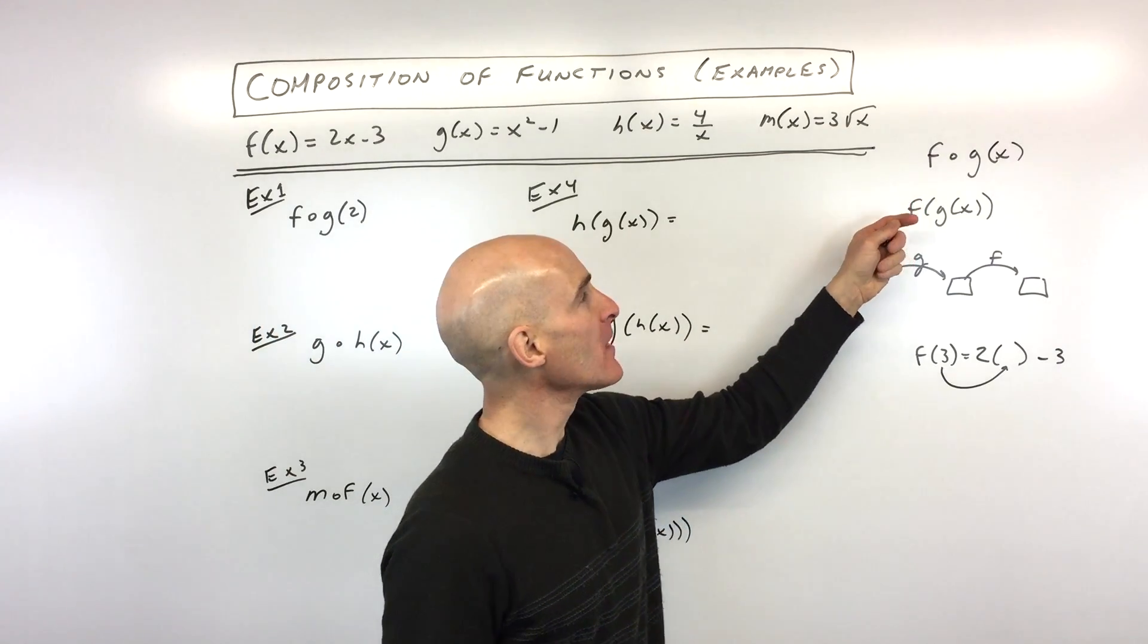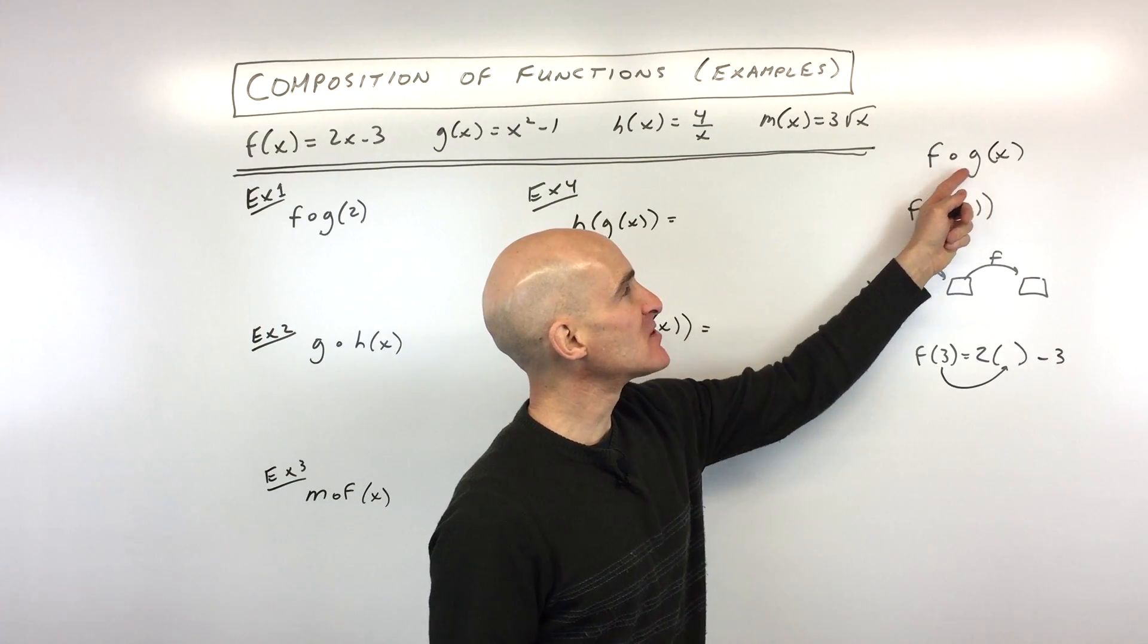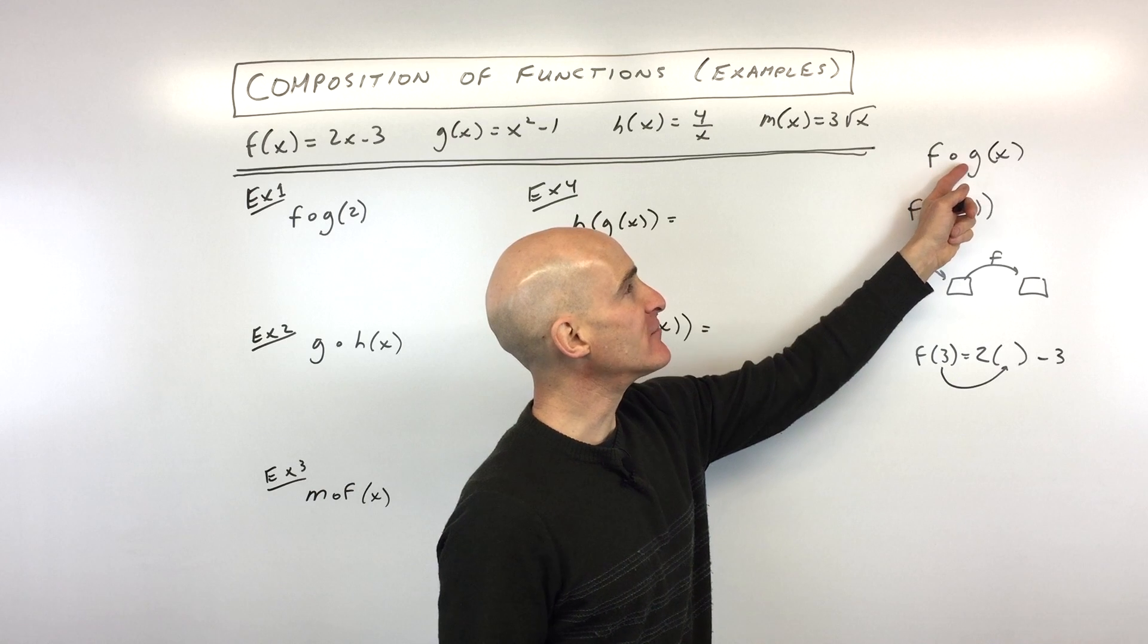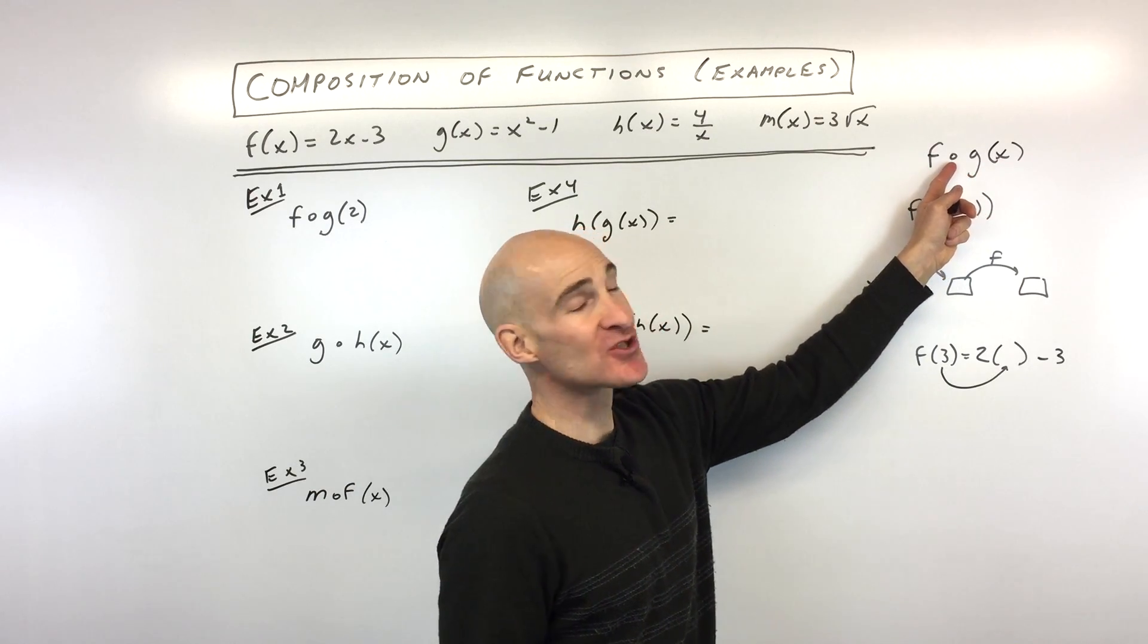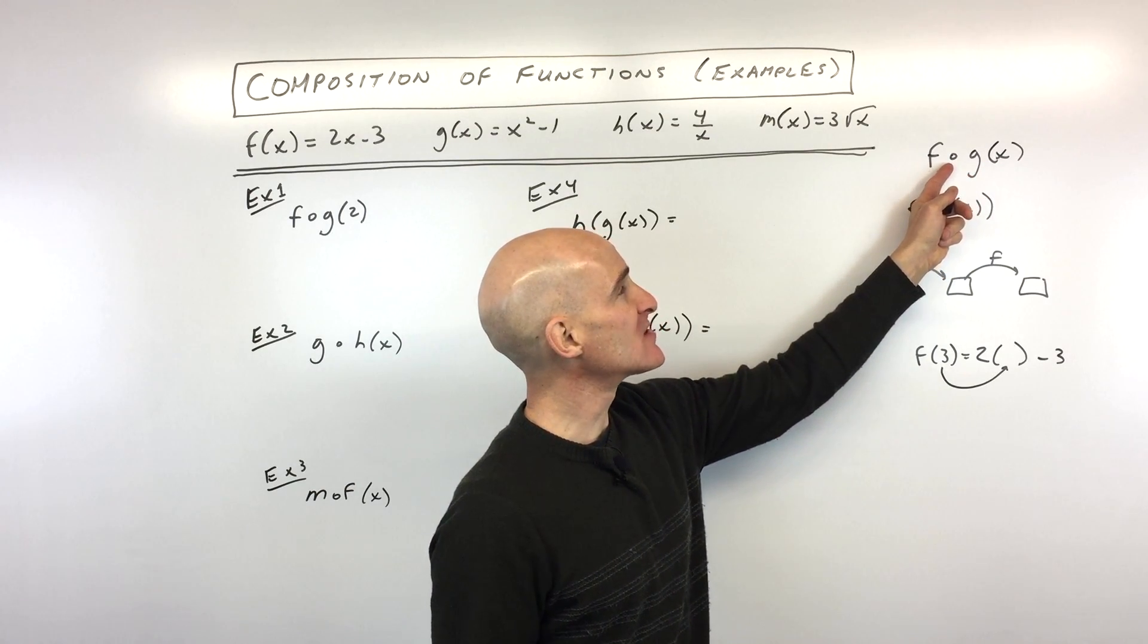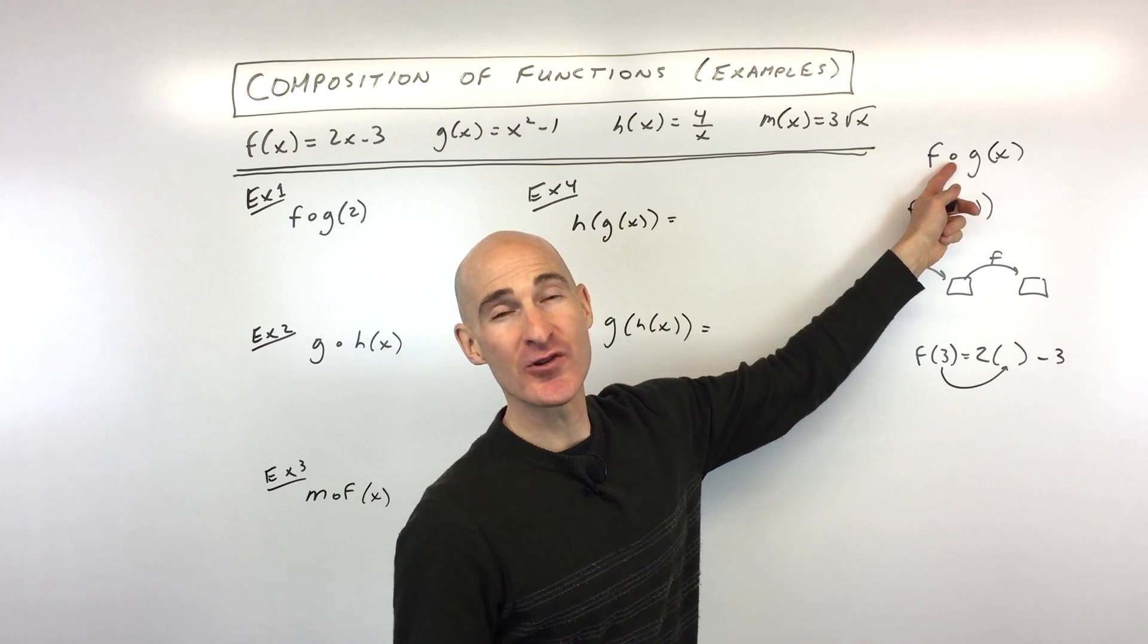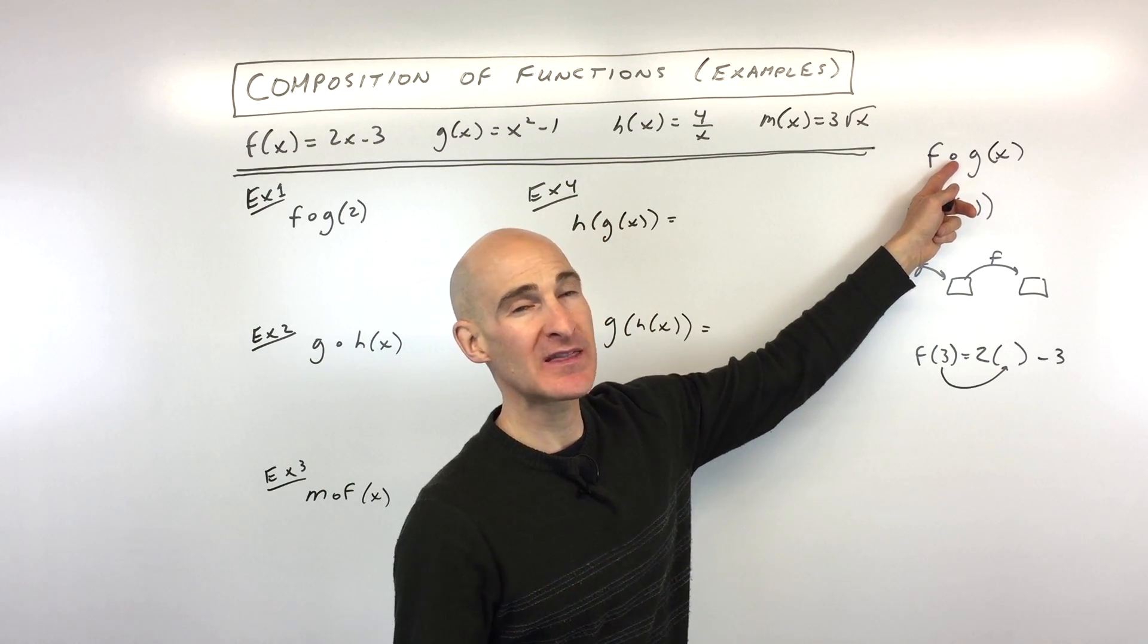I want to talk about the notation. Sometimes when you're doing compositions of functions, you'll see this f of g of x. See this little circle here? Sometimes students mistakenly think this is like a zero or a multiplication symbol, but you don't want to make that mistake.